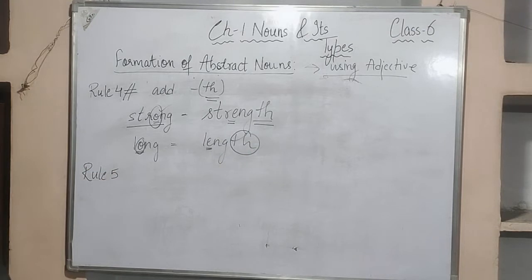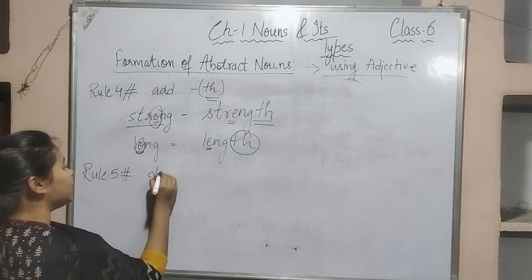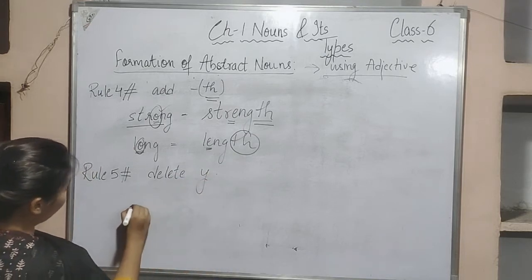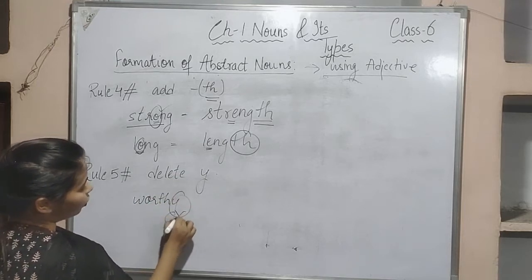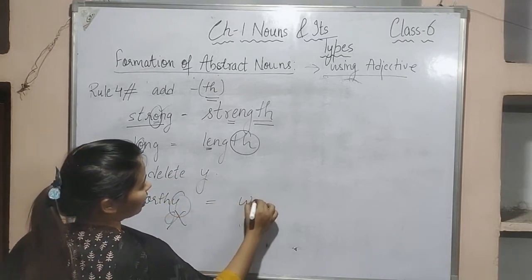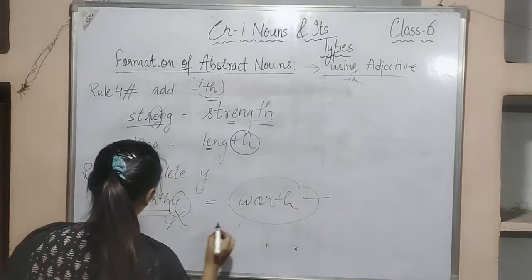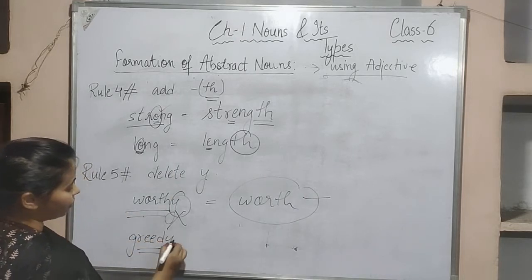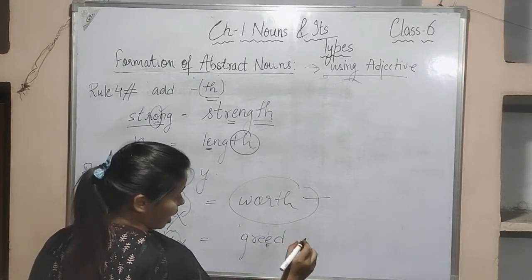The last rule for forming abstract noun from adjective: simply delete the letter -y. For example, 'worthy' is an adjective — delete the y and it becomes 'worth,' an abstract noun. Similarly, 'greedy' is an adjective — delete the y and it becomes 'greed,' which is an abstract noun.